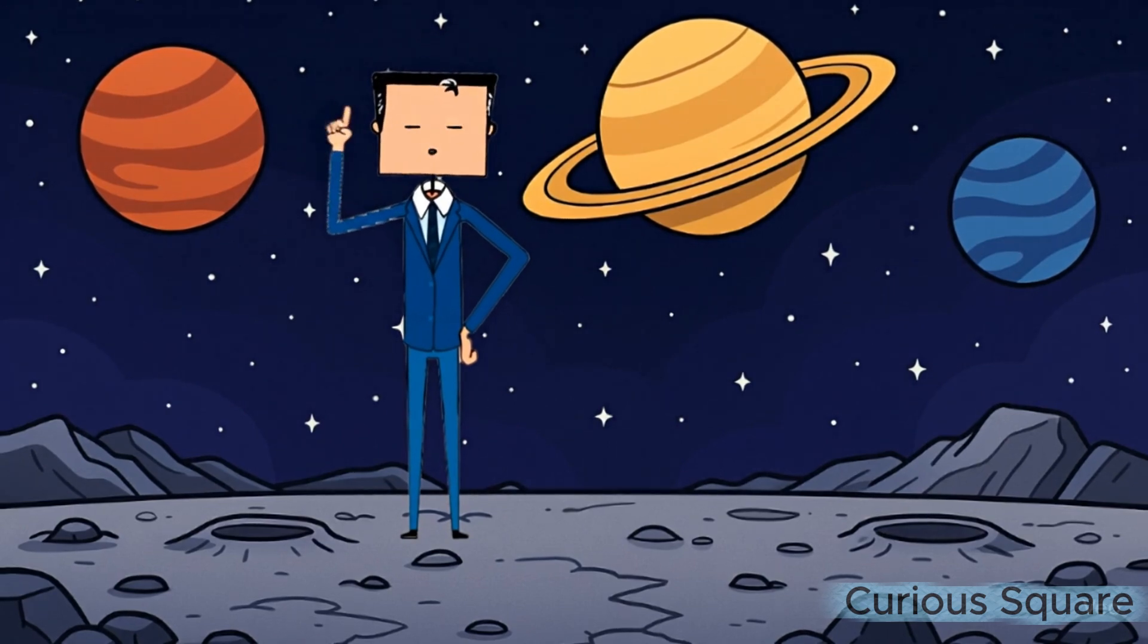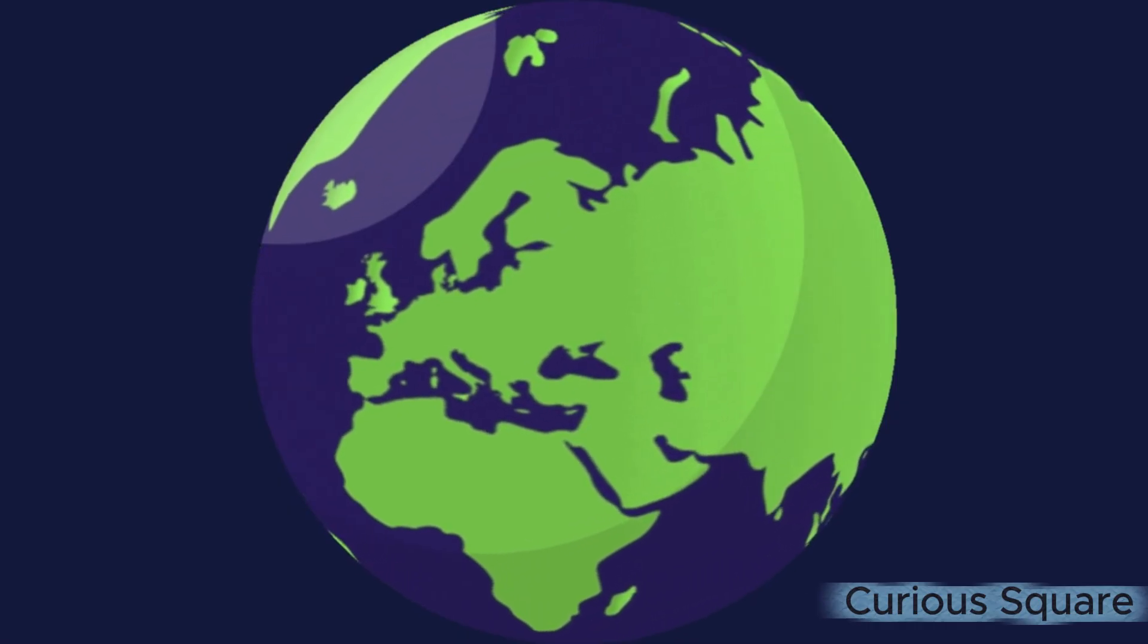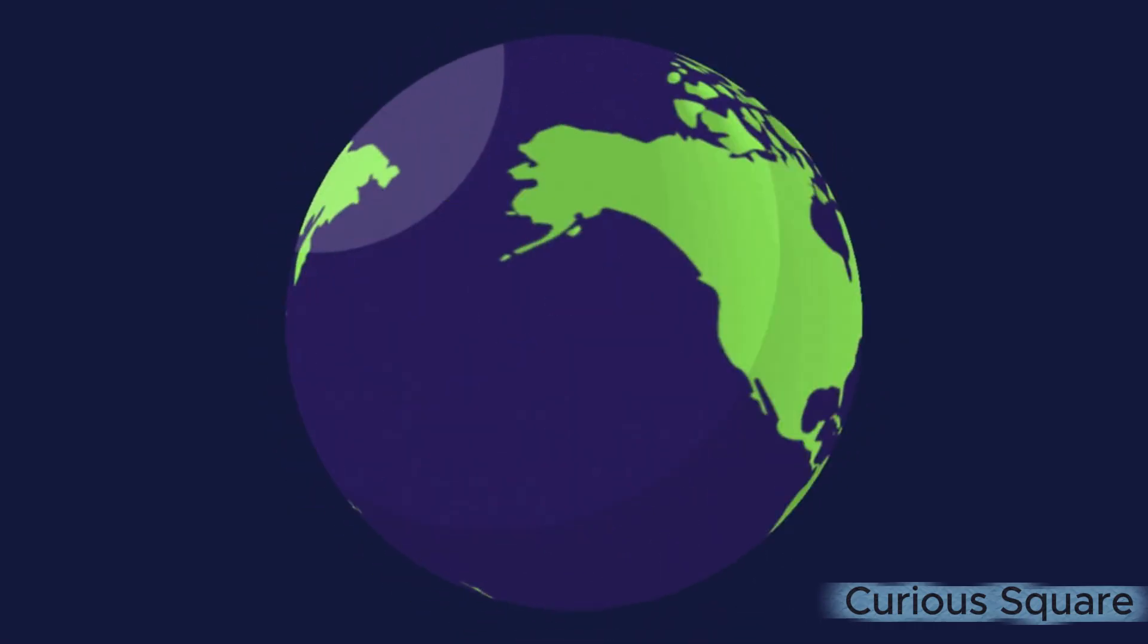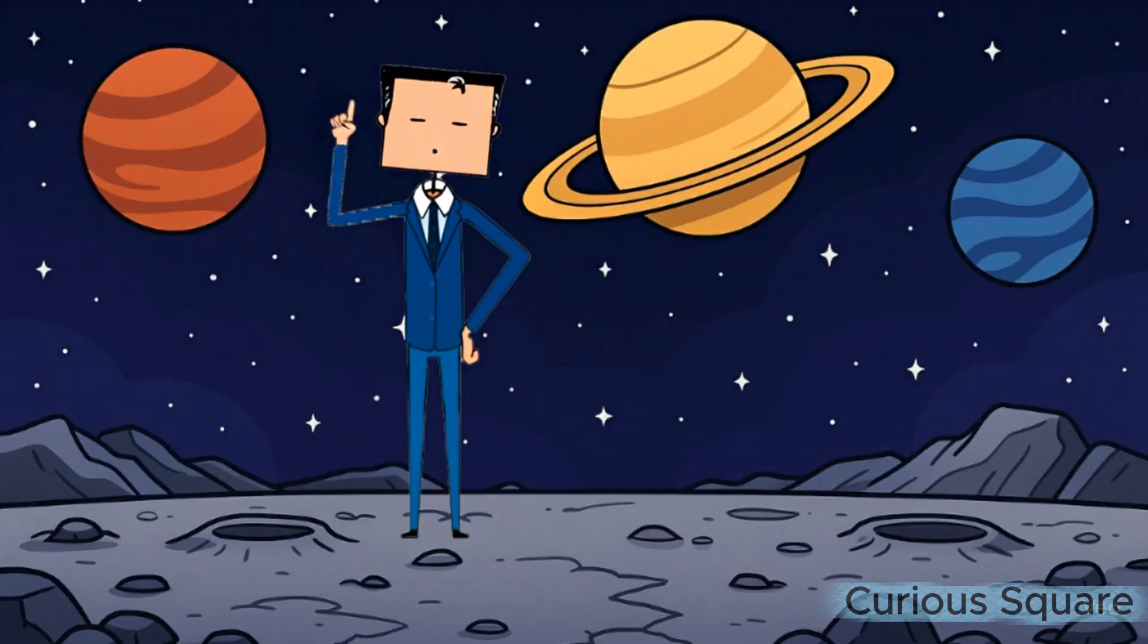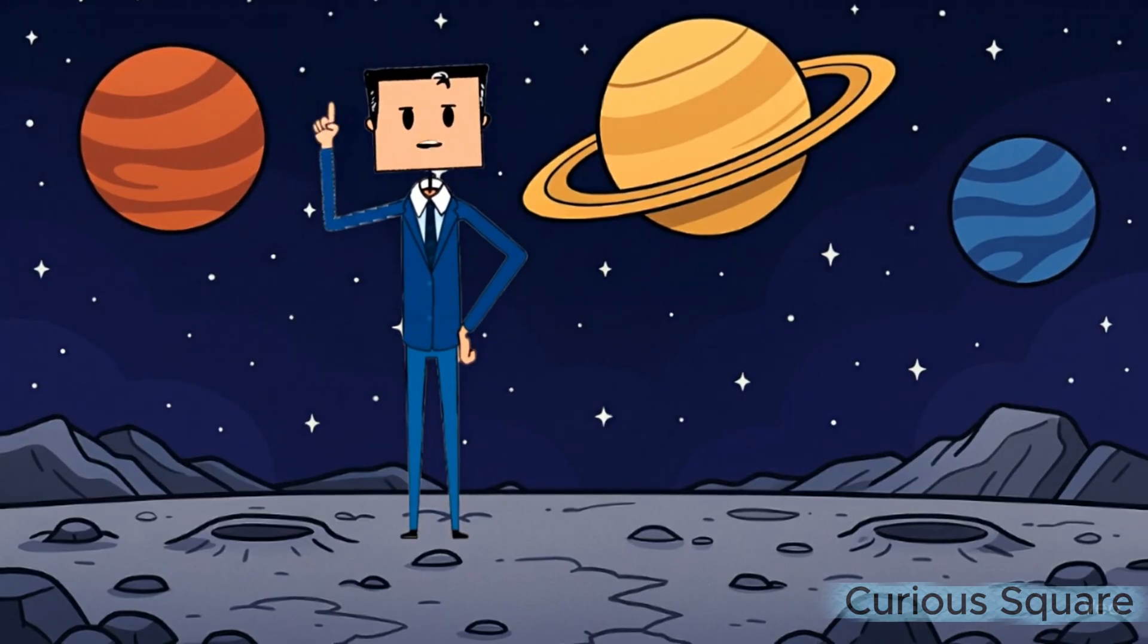And finally, we arrive at our home, Earth. It's about 150 million kilometers away from the sun, and even though it's the only known habitable planet, it still carries a mortality rate of nearly 100 percent. Here, we all share the same destiny.